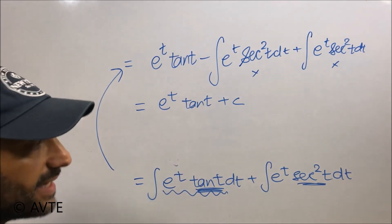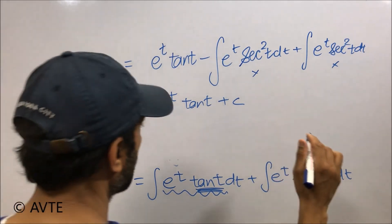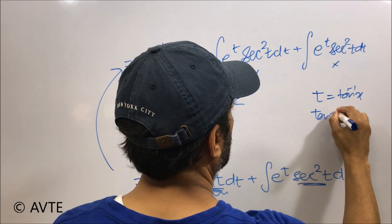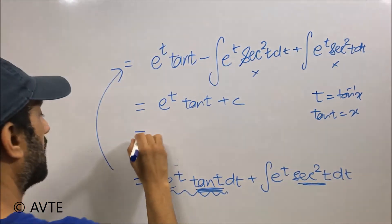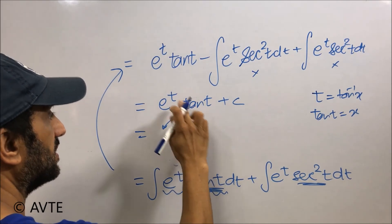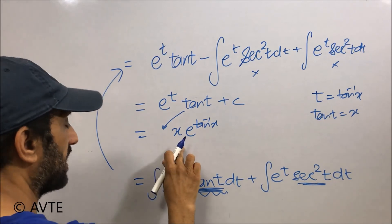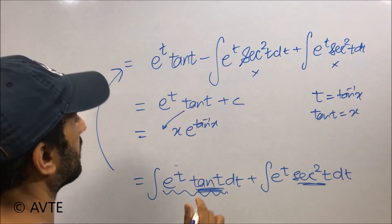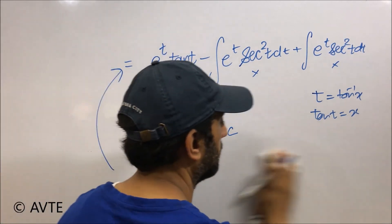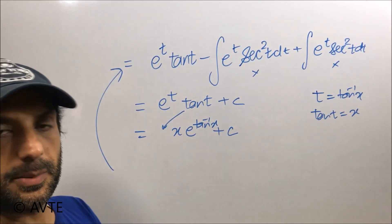Since the question is in x, we need the final answer in terms of x. Recall that t was tan inverse x and tan t was x. So tan t is replaced by x, and e to the power t becomes e to the power tan inverse x. The final answer is x times e to the power tan inverse x plus c. By using the appropriate approach, you can crack these typical questions.